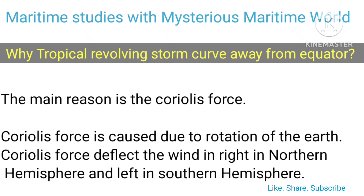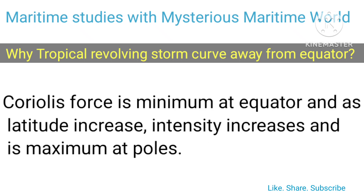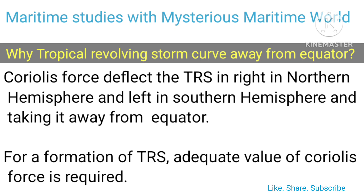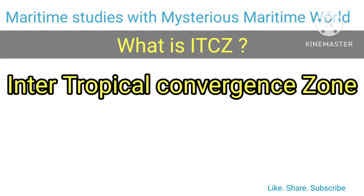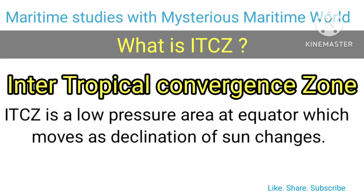The main reason TRS curves away from the equator is the Coriolis force, caused by the rotation of the Earth. Coriolis force deflects wind to the right in the Northern Hemisphere and to the left in the Southern Hemisphere. It is minimum at the equator and increases with latitude, reaching maximum at the poles. The Intertropical Convergence Zone (ITCZ) is a low pressure area at the equator which moves as the declination of the sun changes.